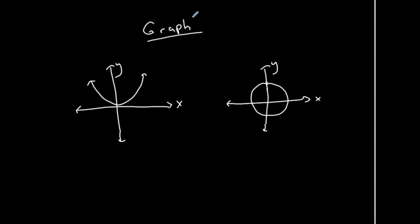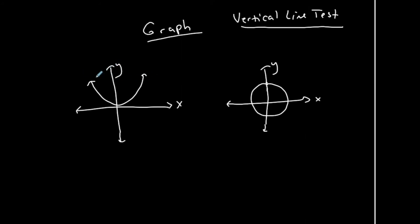If you're trying to determine if a graph represents a function, you use what we call the vertical line test. You hold your pen or marker vertically at any point over the graph. If that vertical line touches more than one portion of your graph, it's not a function. For the parabola, if I draw a vertical line at any point along the graph, it only touches the graph at one point. So it satisfies the definition of a function — for every x there corresponds one y — and it passes the vertical line test.